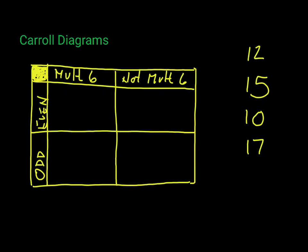Stop the video for a few seconds. Try to work out which of these four numbers goes in which of the four boxes. You may have more than one number in a box, and you may have no numbers in a particular box — that's perfectly okay. Then start the video and I'll show you what I came up with.